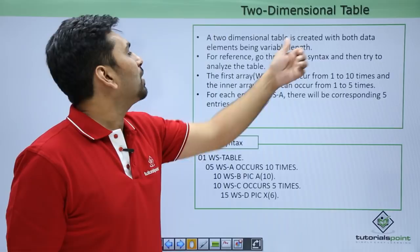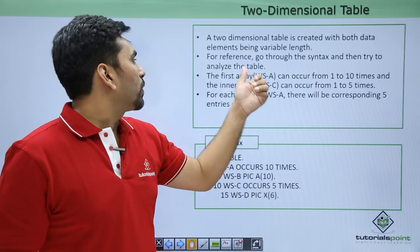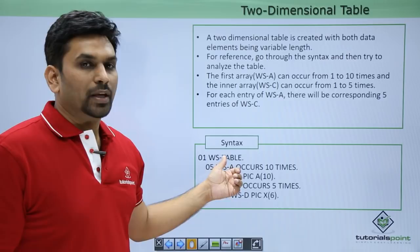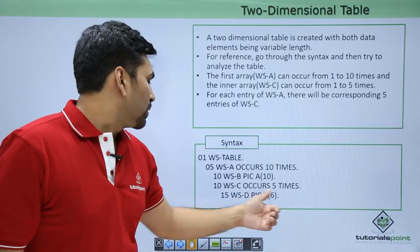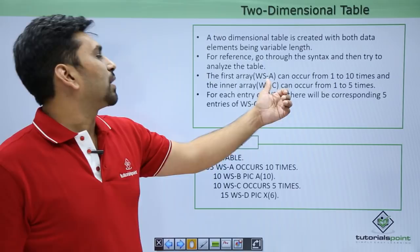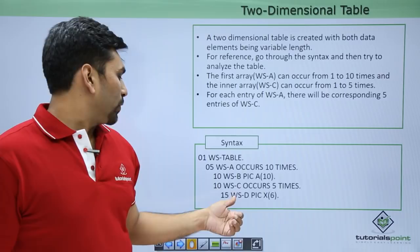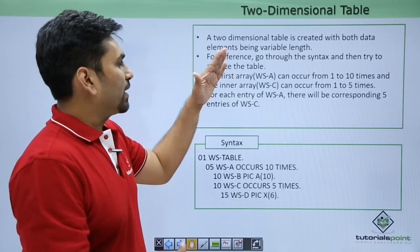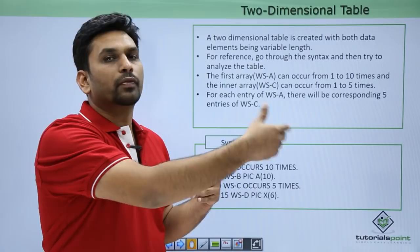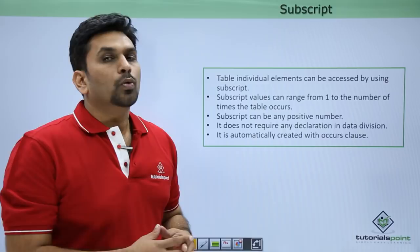A 2D table is created with both data elements being variable length. Here WS-A occurs 10 times as the first element, then WS-B is a picture element, and WS-C occurs 5 times at the 10th level. At the 15th level we have WS-D of PIC X(6). The outer array WS-A can occur 1 to 10 times, and the inner array WS-C can occur 1 to 5 times. For each entry of WS-A there will be 5 corresponding entries of WS-C.